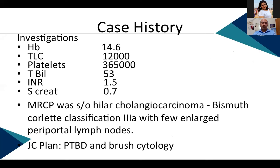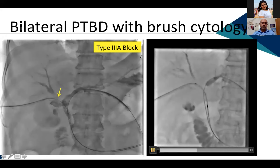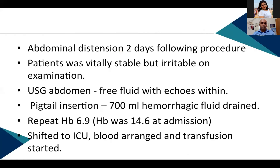MRCP was done, suggestive of hilar cholangiocarcinoma, Bismuth classification type 3A block, with a few enlarged periportal lymph nodes. The joint clinic plan was to perform a PTBD and brush cytology. PTBD was done, confirming type 3A block, and brush cytology was performed using the brush cytology device.